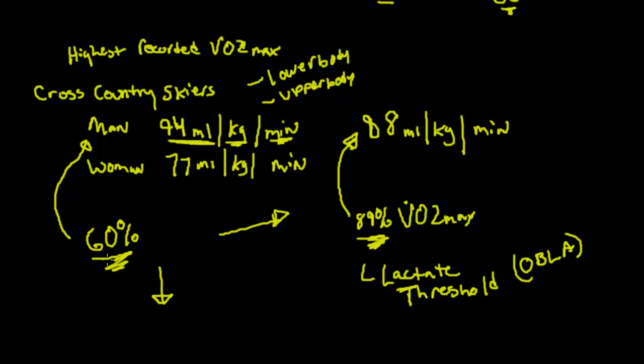Therefore they cannot go any higher with their percent VO2 max. Whereas this individual can train at a much higher VO2 max because their lactate threshold is higher. It takes longer or a higher intensity for blood lactate to start to accumulate.